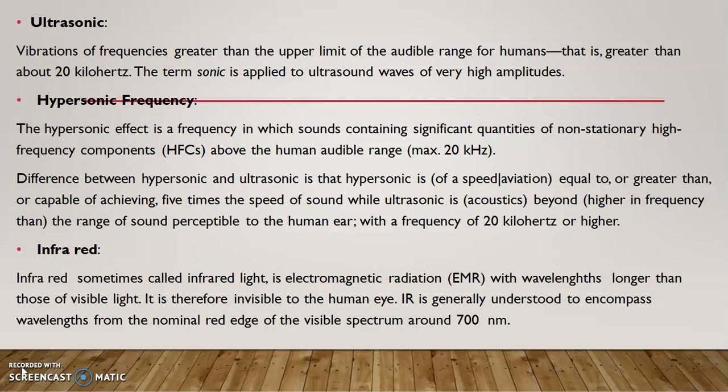The next word is infrared. In the rainbow colors — violet, indigo, blue, green, yellow, orange, red — the red is 700 nanometers, and beyond that edge is infrared. It is electromagnetic radiation, invisible to the human eye, with a wavelength greater than 700 nanometers. Those are IR rays.